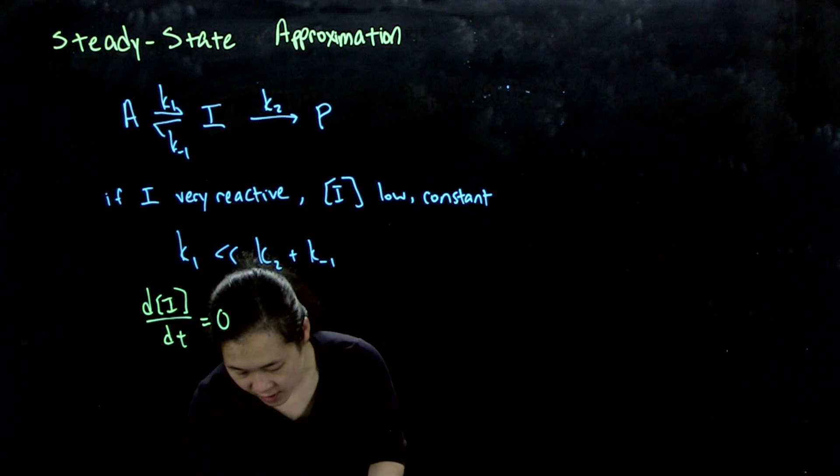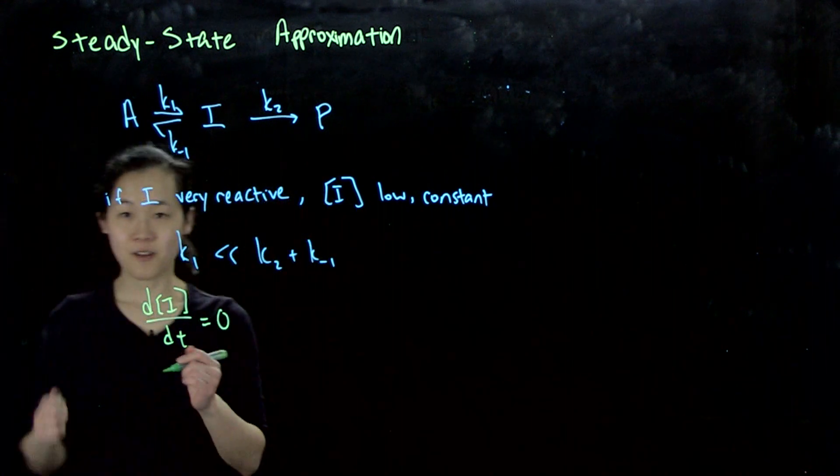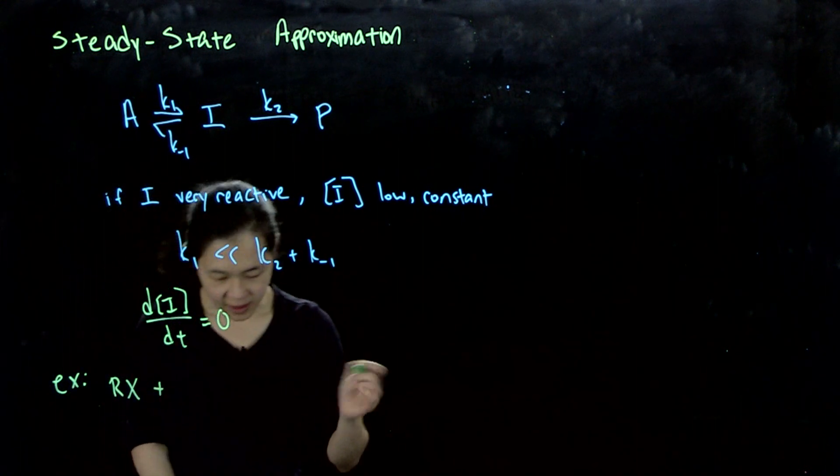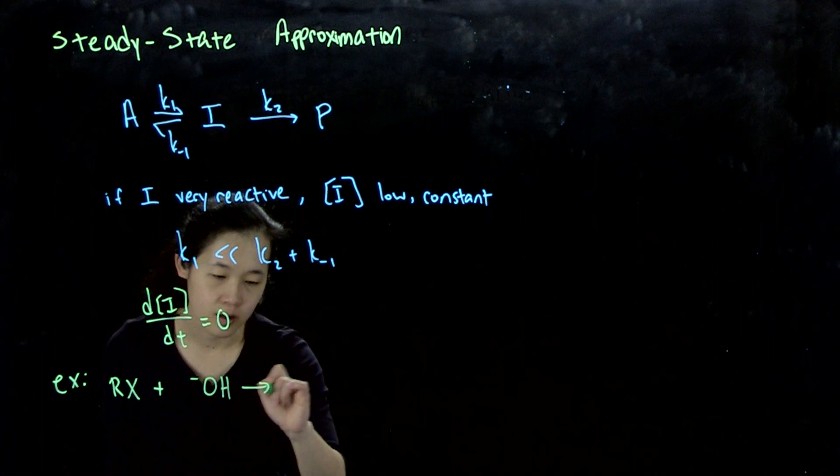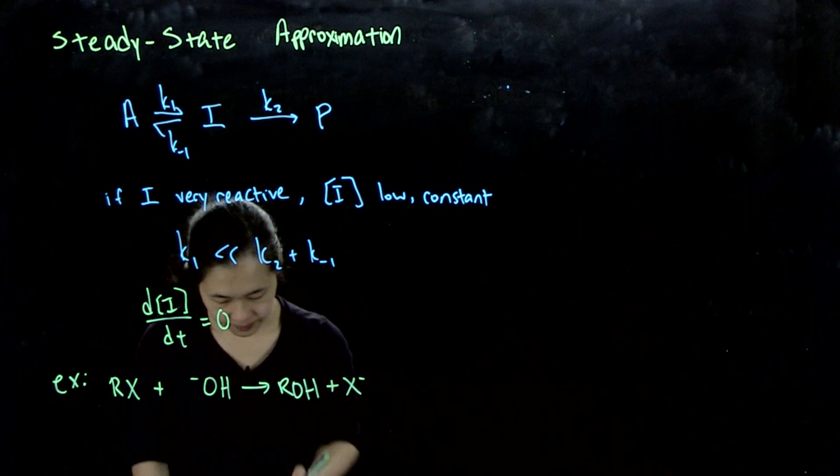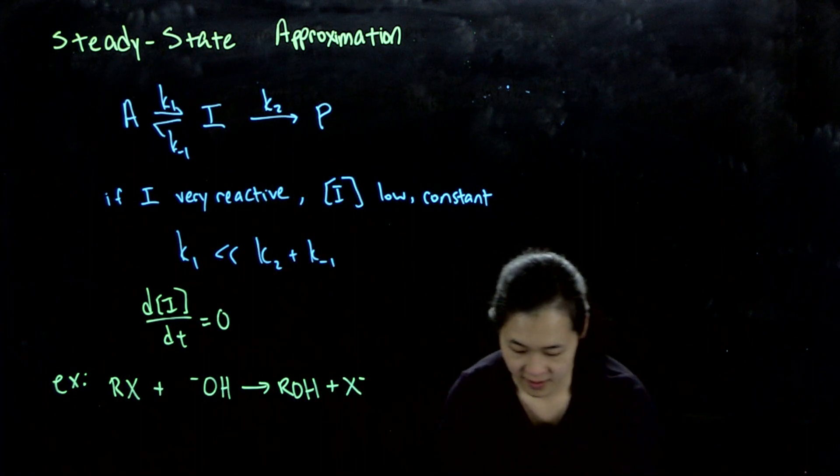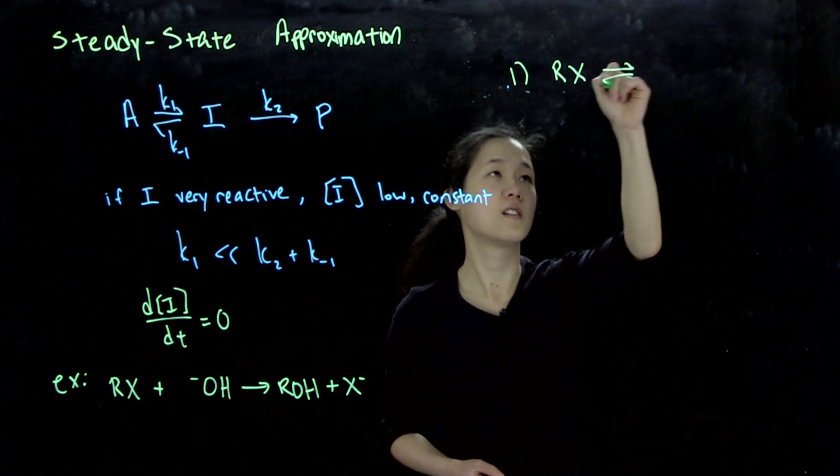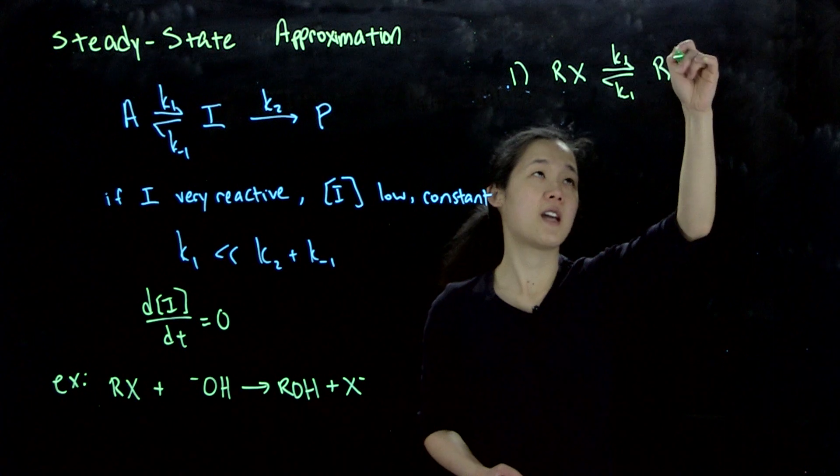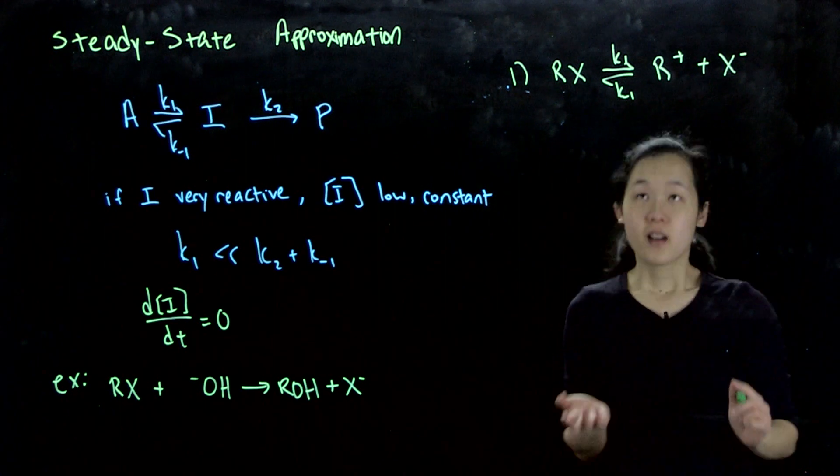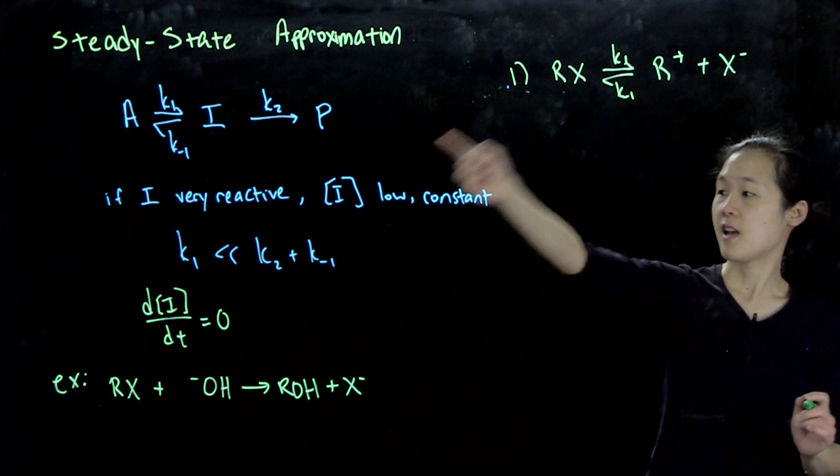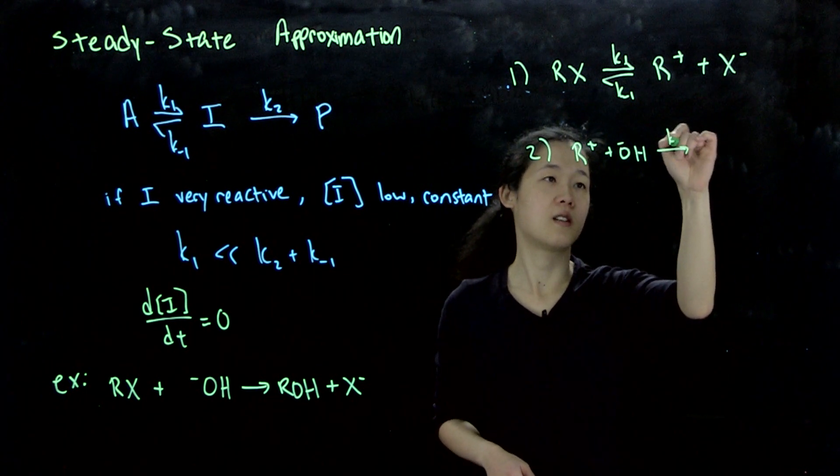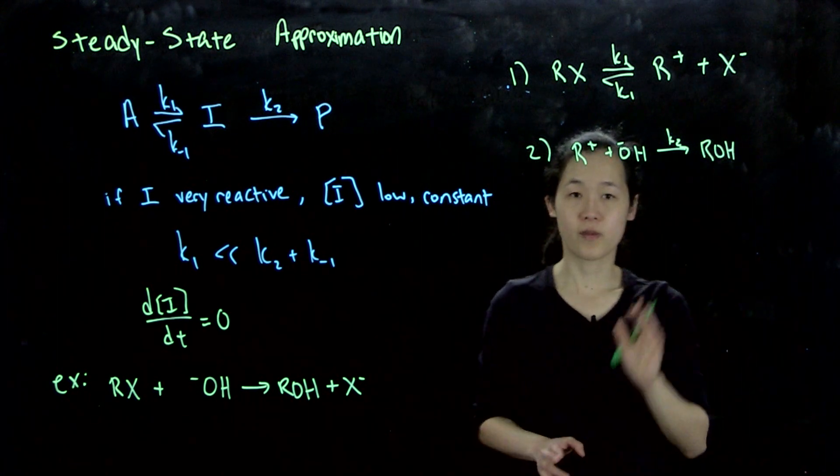Let's do an example. Here's my example. If we think about the reaction of some sort of alkyl halide plus hydroxide goes to the alcohol. And let's suppose our mechanism somewhere over here. The first step is some sort of dissociation. Step one: we have RX, forward reaction, back reaction, to form the cation plus X minus. In this case, this R+ is going to be our intermediate because we don't have this as a reagent in our overall reaction. And then our second step is going to be R+ plus OH minus K2 to ROH.